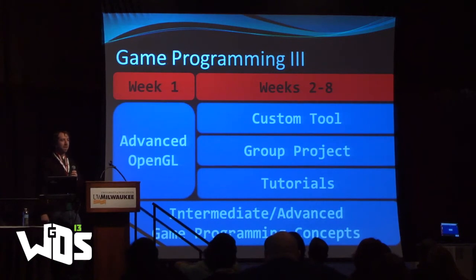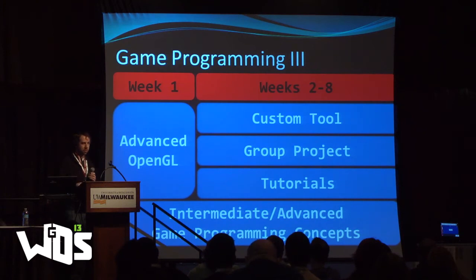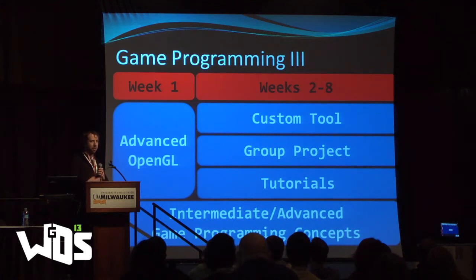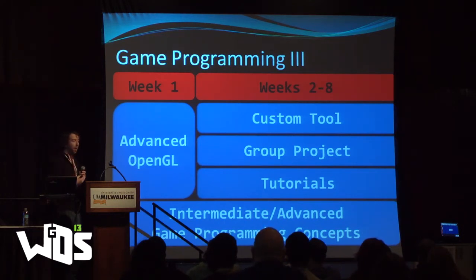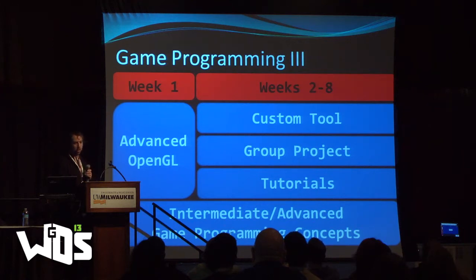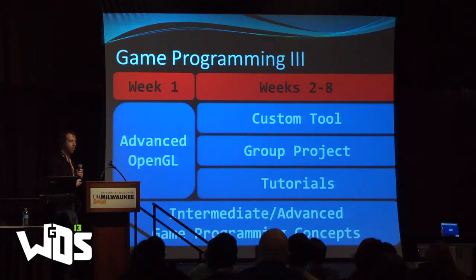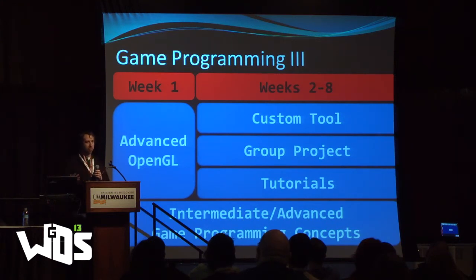In Game Programming 3, this is probably what I call one of the harder ones, though personally I think Game Programming 2 is harder for students. But with Game Programming 3, there's more individual direction versus me telling them what to do. The first week covers advanced OpenGL — how to gain access to versions 1.2 through 4.3. Then weeks 2 through 8 are all project work. Throughout this time, we're also talking about intermediate and advanced game development topics whenever they come up.